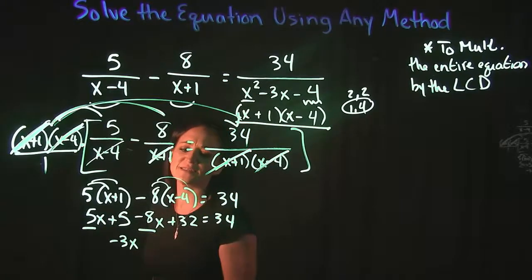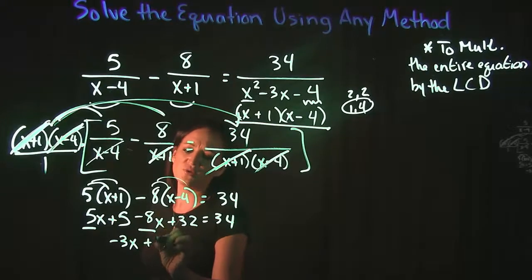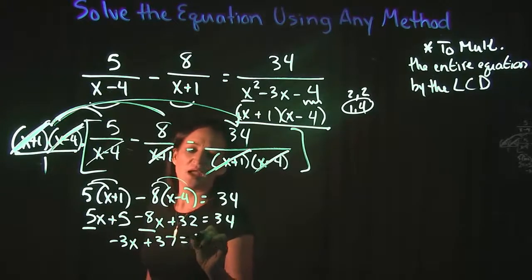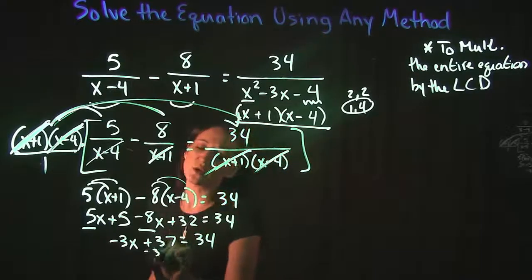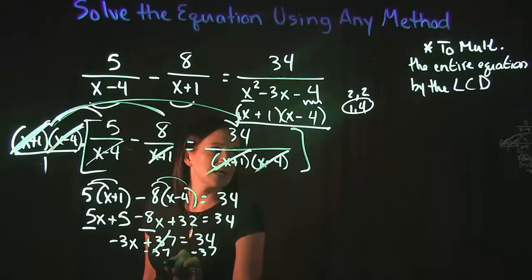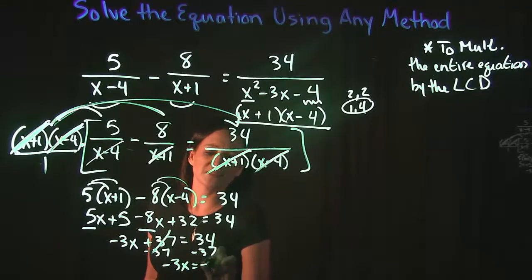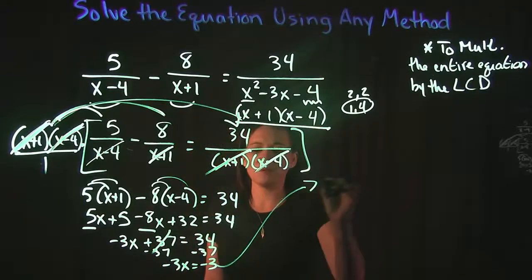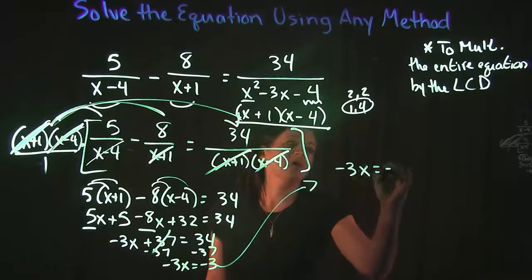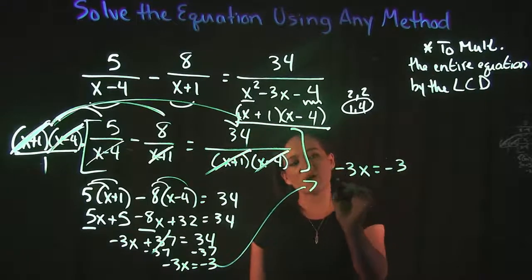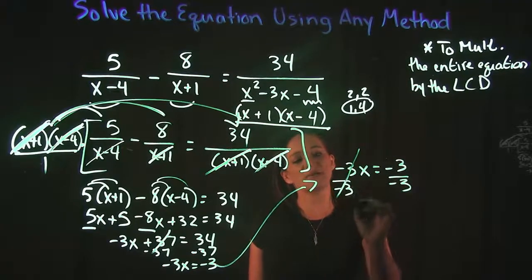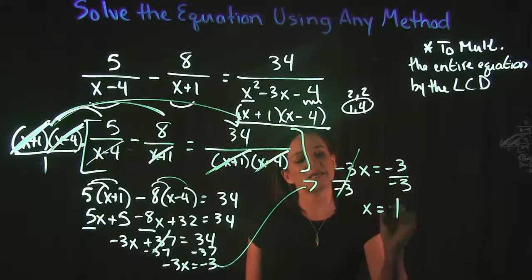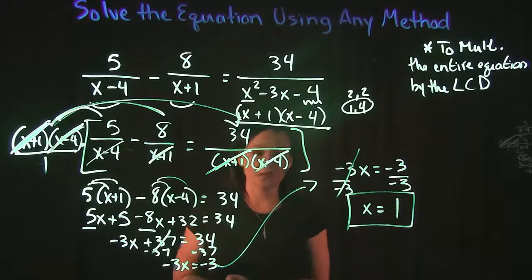We're solving for x here, so we're going to subtract the 37 on both sides to give us negative 3x is equal to negative 3. The only thing left to do to solve for x is to divide out your coefficient. So divide both sides by negative 3 to get that x is equal to 1. Otherwise, that's it for this problem.